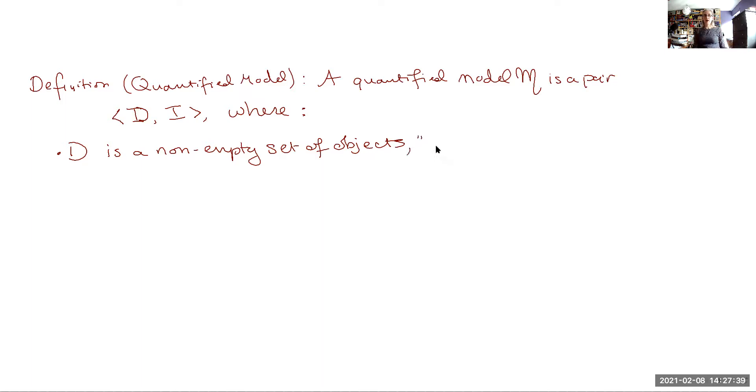So this is called the domain or sometimes called the domain of discourse because maybe you're kind of restricting your consideration, not just to everything, but to some subset. It's also sometimes called the universe or the universe of discourse. All of these are the same thing, but all that it is, it's a set and it has things in it and these things will have different properties.